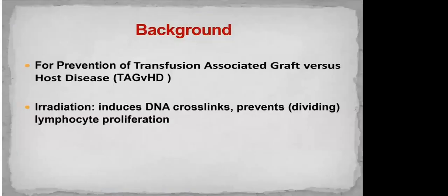The main goals of blood irradiation are: first, to prevent transfusion-associated graft versus host disease (TA-GvHD), and second, to induce DNA cross-linking and prevent lymphocyte proliferation.